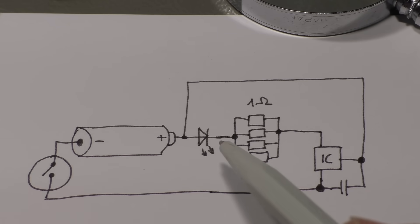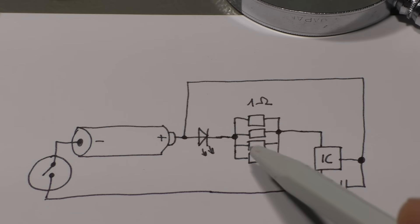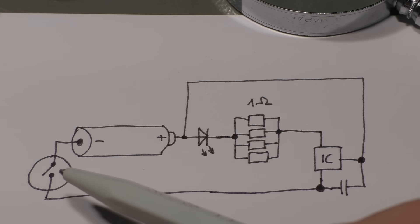So we have the battery. We have that switch that is in the end cap here. Then from the battery we go directly to the white LED. Then we have four 1 ohm resistors in parallel. It gives us 0.25 ohms.